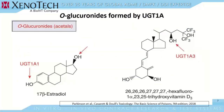Examples of O-glucuronides formed by UGT1A enzymes are 17-beta-estradiol and trihydroxyvitamin D3. Please note that in cases where a given molecule is metabolized at more than one position, the term bisglucuronide is used. In the case of 17-beta-estradiol, multiple UGTs can participate in metabolism of that molecule.